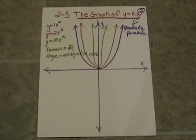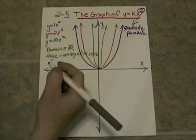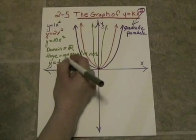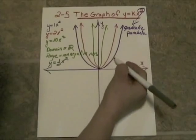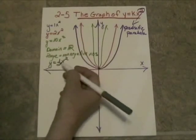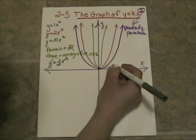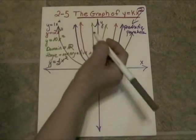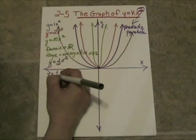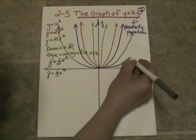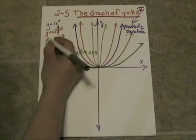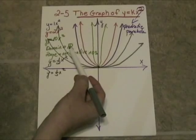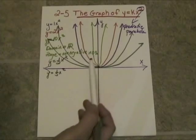Let's see what happens if we try a k that is less than one but still positive, like a fraction. With y equals one-half x squared, the effect is flattening out the parabola compared to y equals x squared. If we try y equals one-fifth x squared, it gets even flatter. Everything still stays in the first two quadrants — no negative range values. The domain is still all real numbers and the range is still all non-negative numbers.